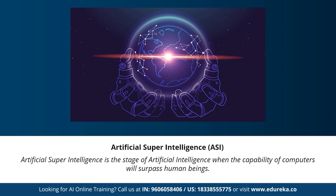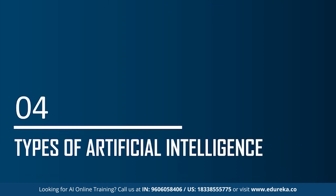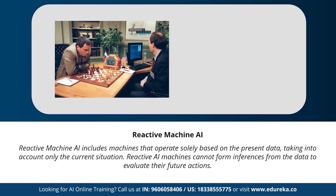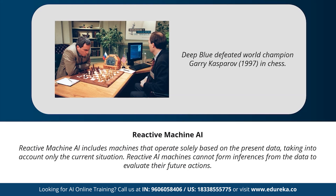Now moving on to the different types of artificial intelligence. Based on the functionality of AI-based systems, artificial intelligence can be categorized into four types. The first type is reactive machines AI — machines that operate solely based on present data and take into consideration only the current situation. Reactive AI machines cannot form inferences from data to evaluate future actions. An example is IBM's chess program that beat world champion Garry Kasparov, one of the most impressive AI machines built so far.